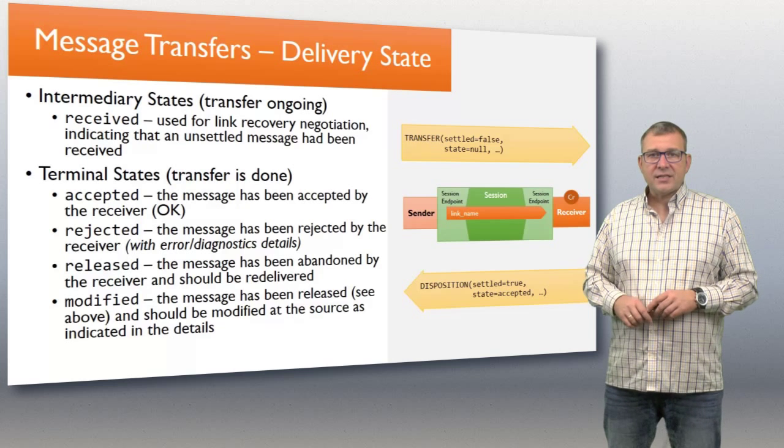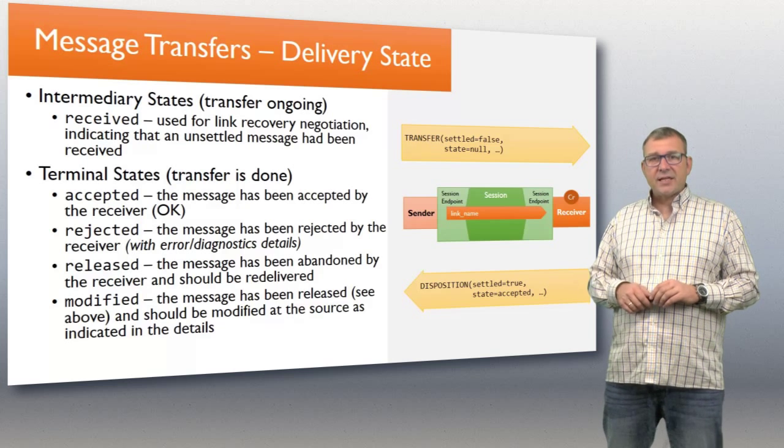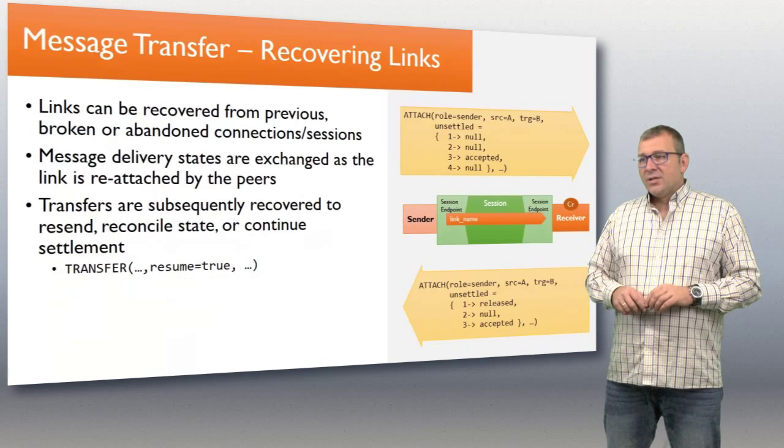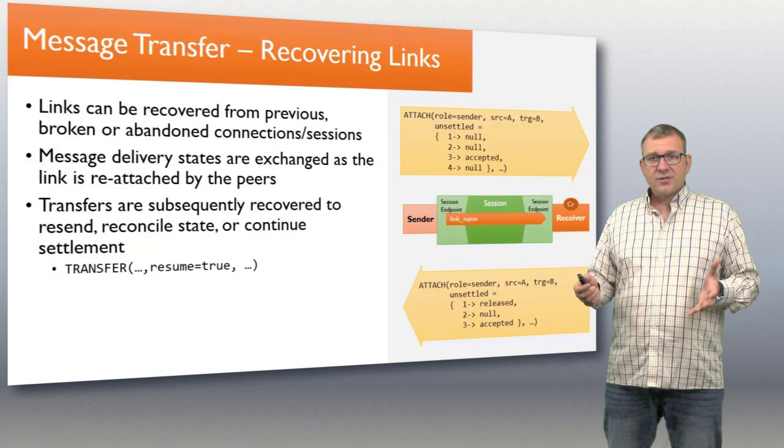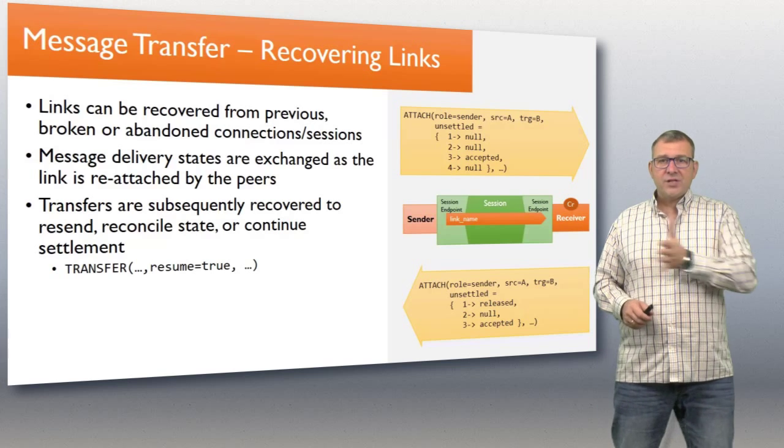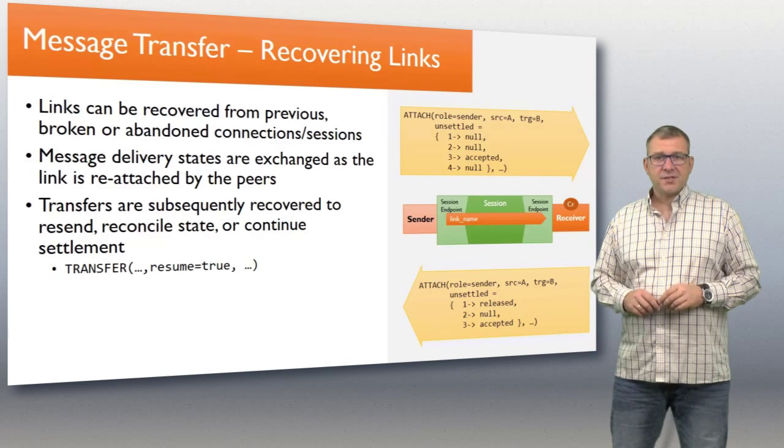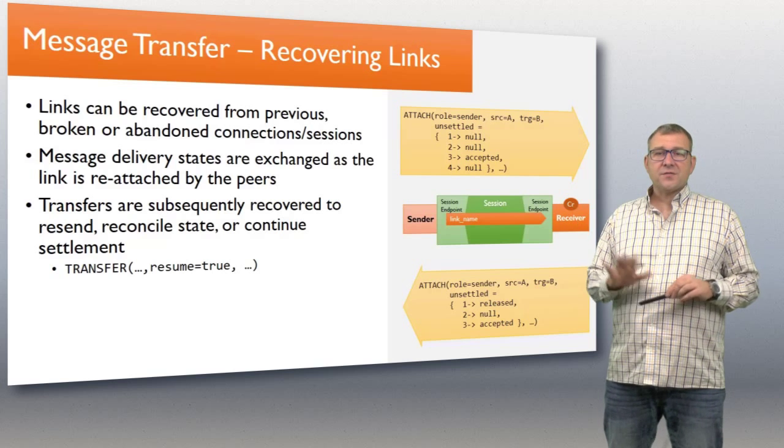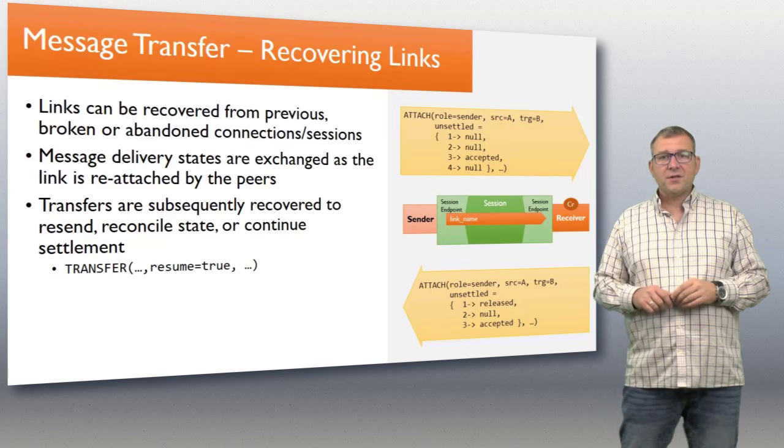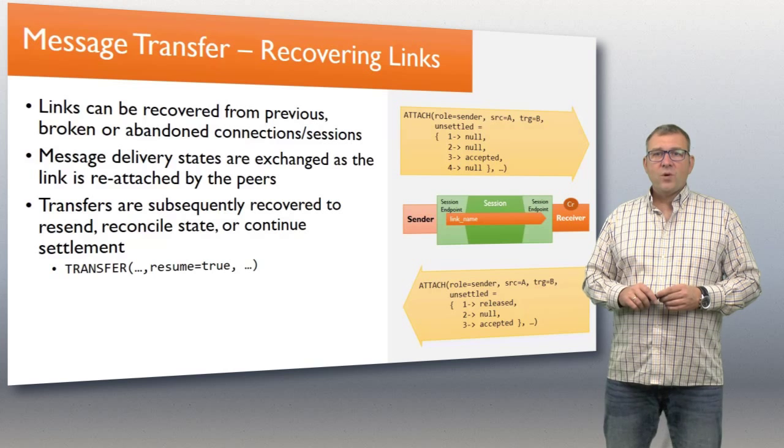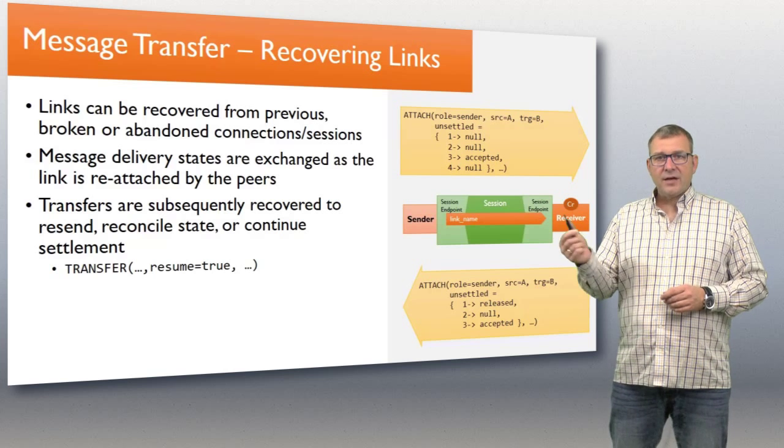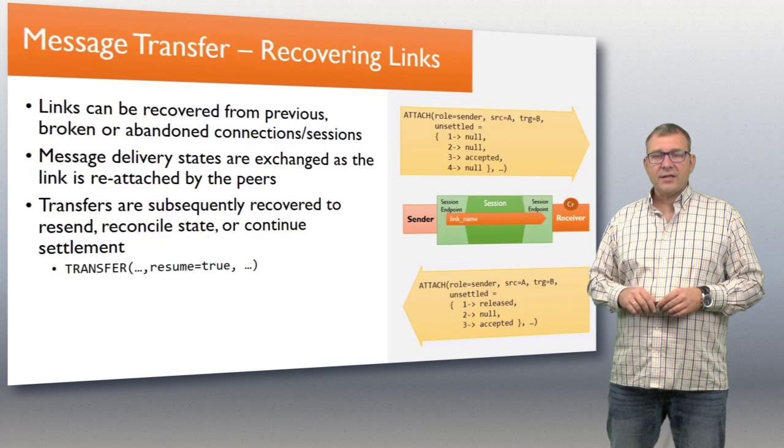There's one intermediary state that's defined, and that's the received state. That received state is important for repairing links. When we're transferring messages, between effectively sending that message and receiving the disposition frame, the connection now cuts. With at-least-once settled transfers, most messages will get lost if the connection drops while they're being transferred. If that happens when you have this handshake, when you have disposition, when you have settlement required, then you can repair those links.